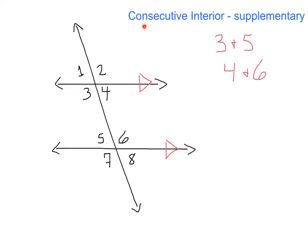Our last type: consecutive interior angles. These ones are supplementary, which means they add to 180. Consecutive, instead of alternate, means on the same side. Interior still means on the inside of the parallel lines. So our consecutive interior angles are 3 and 5 — they're on the same side of the transversal. Our other pair of consecutive interior angles are 4 and 6. These are supplementary, so they add up to 180 degrees.